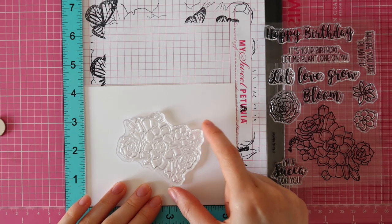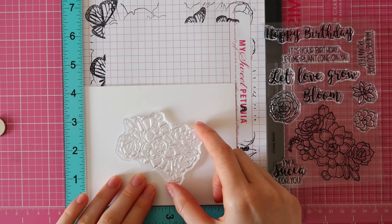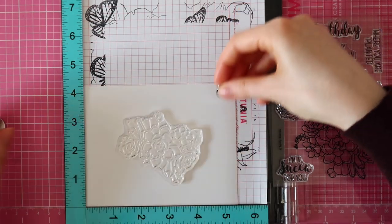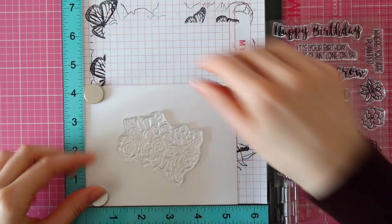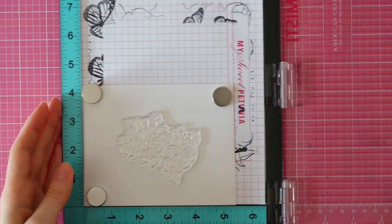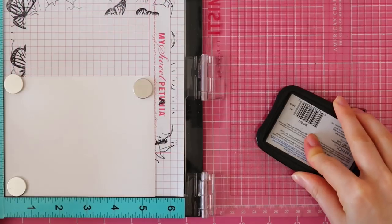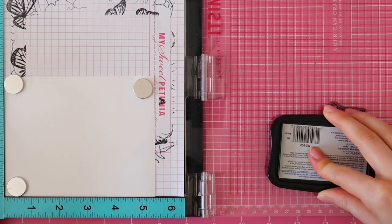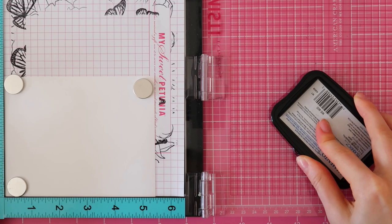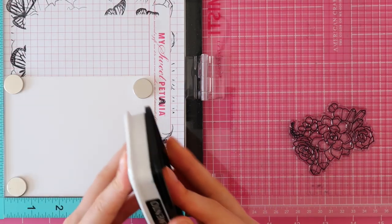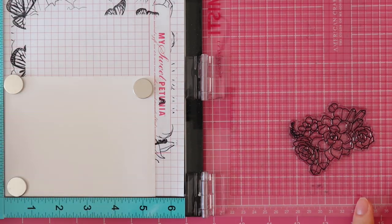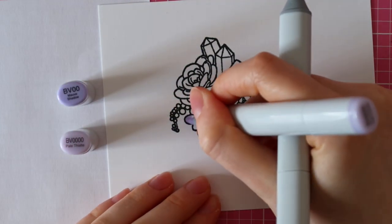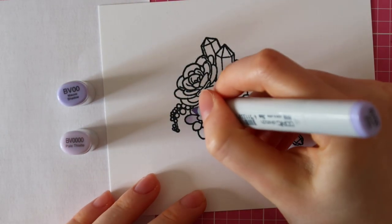So let's get started. I'm starting out with the Let Love Grow stamp set from Trinity Stamps and I'm positioning it on a piece of Neenah Solar White cardstock. This is the 110 pound cardstock. I'm inking up the beautiful succulent arrangement with Memento Tuxedo Black ink and then I'll color it with my Copic markers.